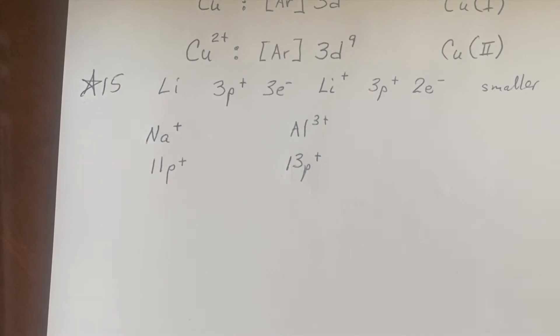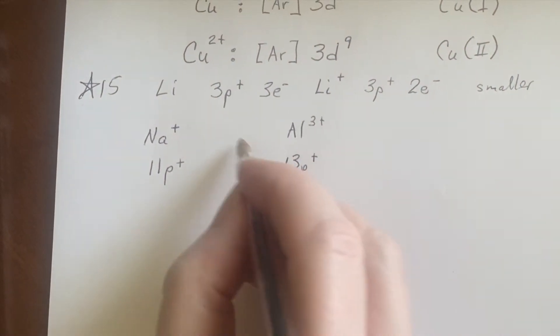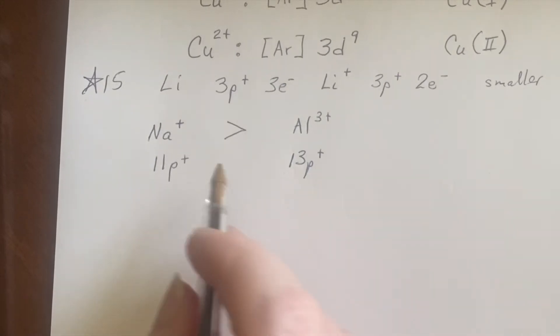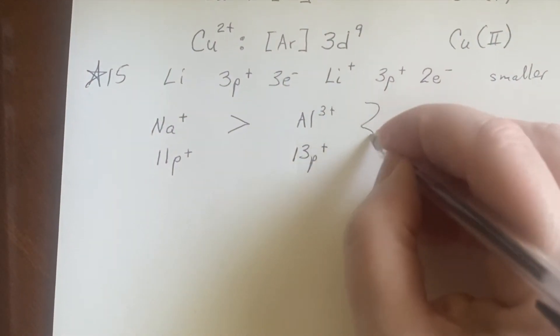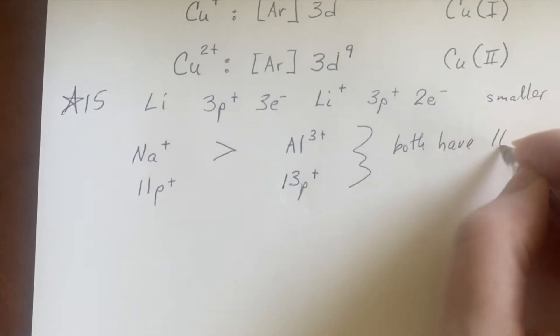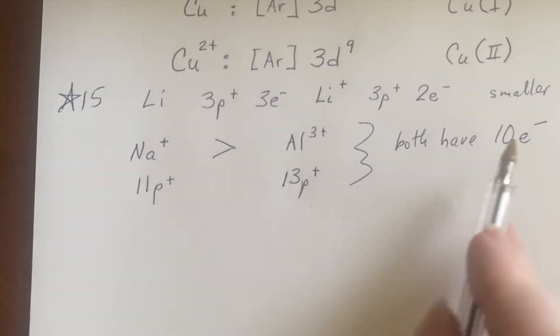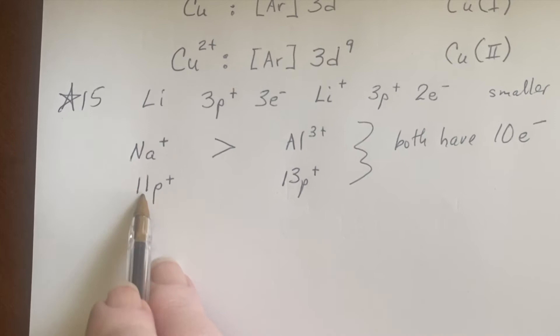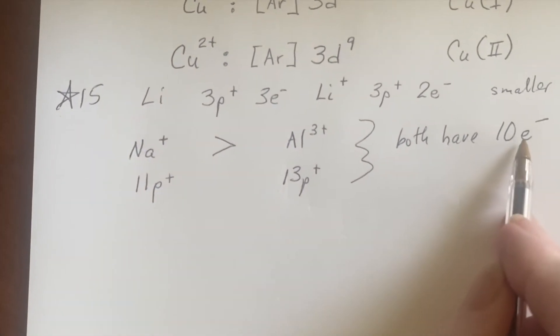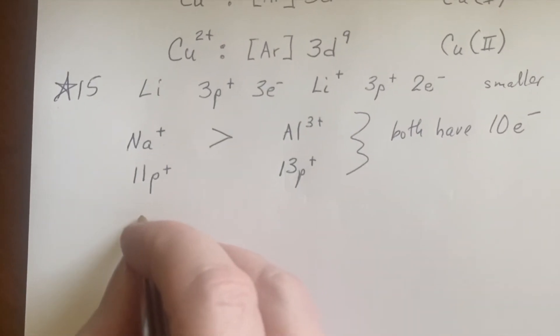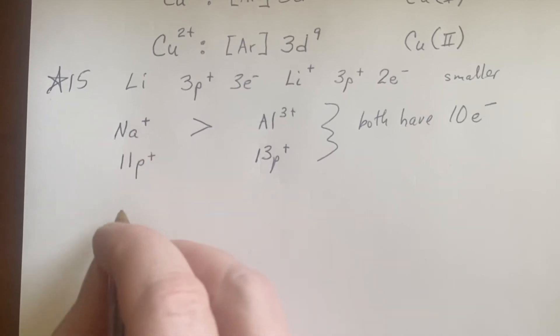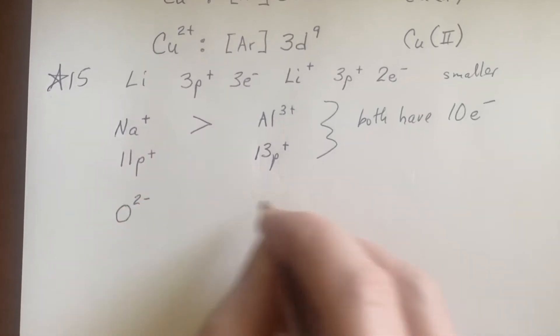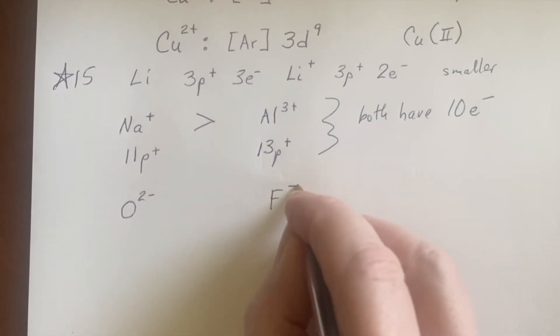Sodium with a plus charge is going to have 11 protons, and the aluminum with the plus three charge also has this situation. I see that the size is like this, and you can see that they both have 10 electrons. So 13 protons pulling on 10 electrons will pull it in tighter than 11 protons pulling on 10 electrons.